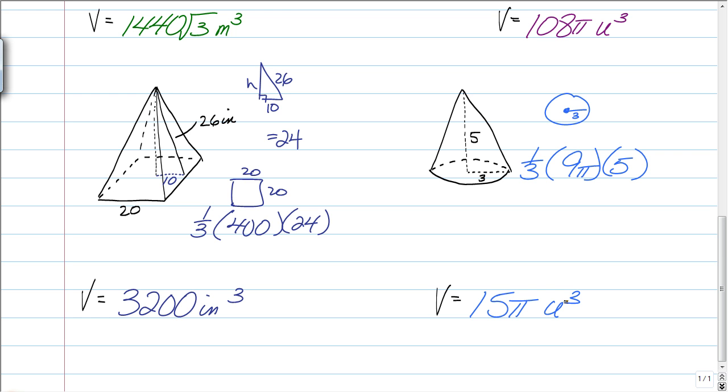That's it for volume. Just remember, it's always going to be base area times the height. But when you're working with a pyramid or a cone, you have to multiply it by one-third. That's it for volume. This is Longo, and I'm out. See you, bye.